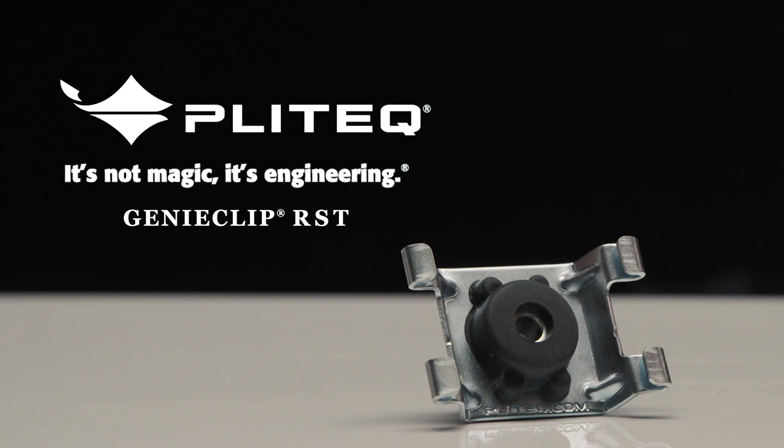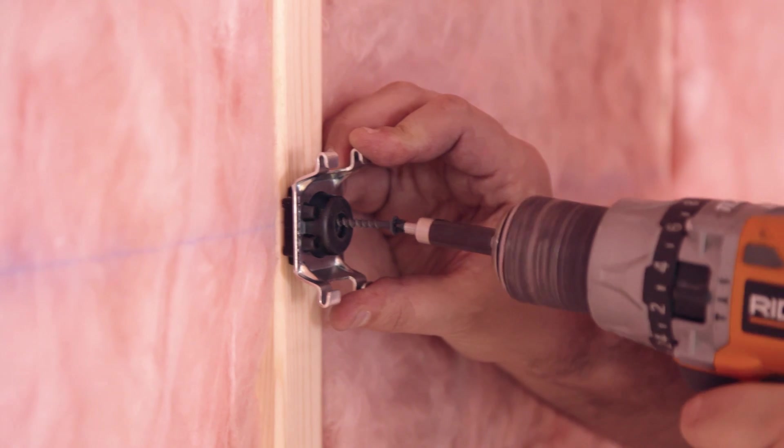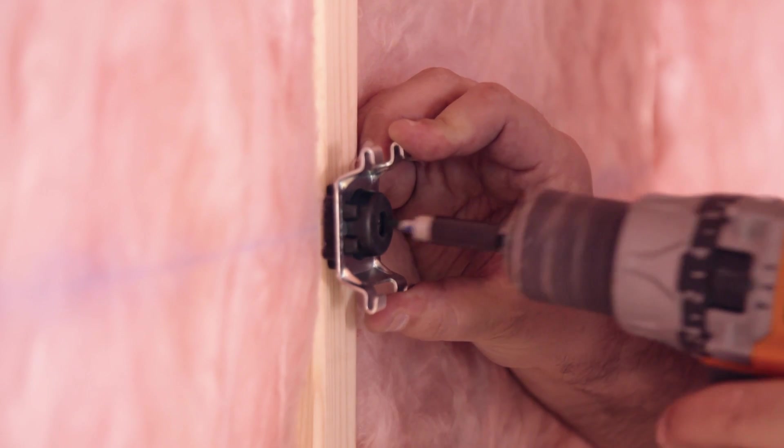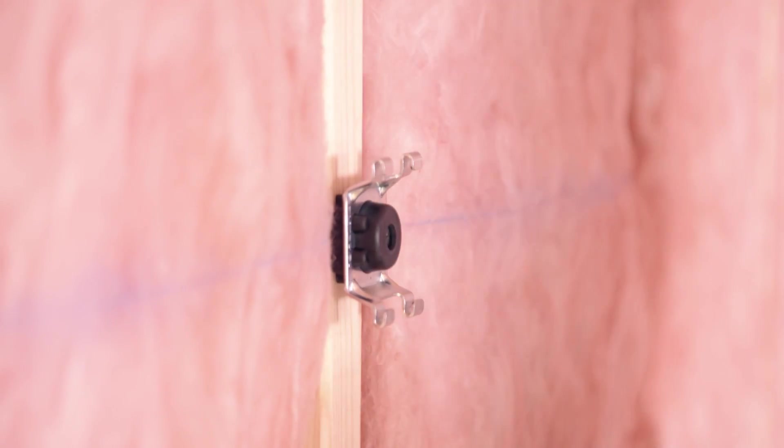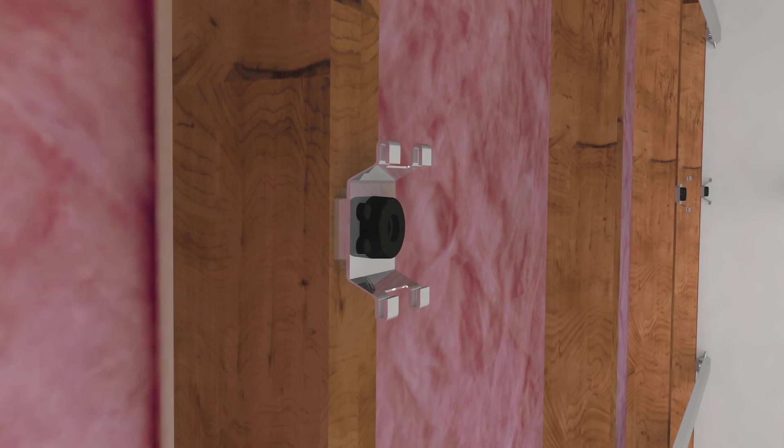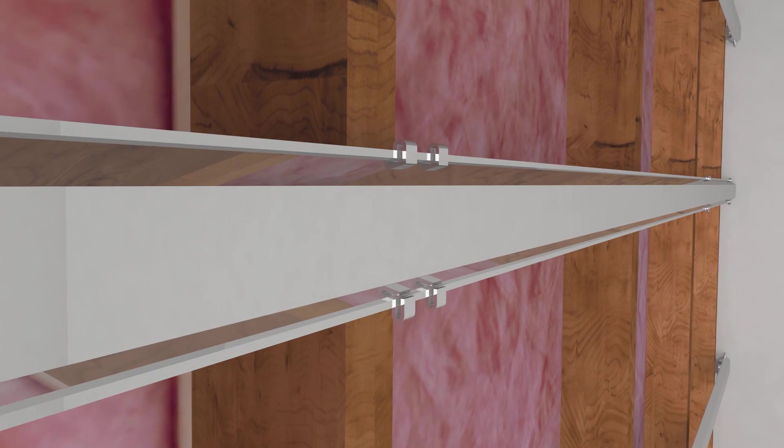The patented Genie Clip is a small rubber and galvanized steel mount engineered to reduce sound transmission in buildings. This simple yet innovative device uses the resilient properties of rubber to decouple gypsum board from the structural elements of a wall or ceiling.